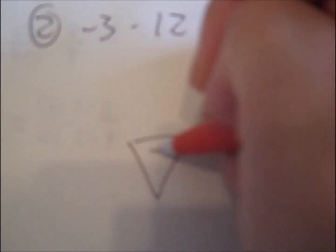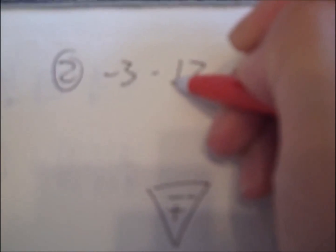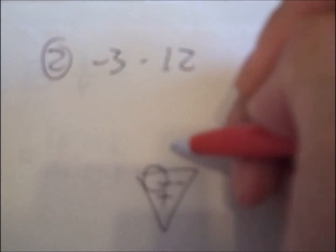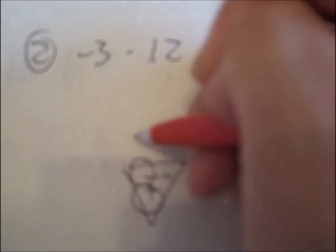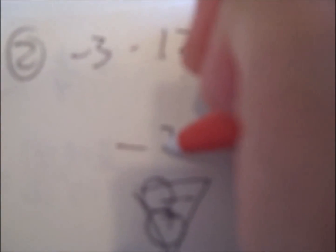Next, negative 3 times 12. The face, I have a negative right here, circle a negative. I have a positive, circle a positive. My answer should be negative. 3 times 12 is 36. Answer, negative 36.